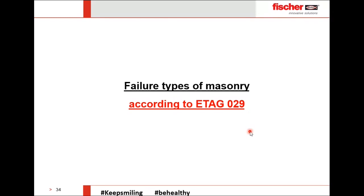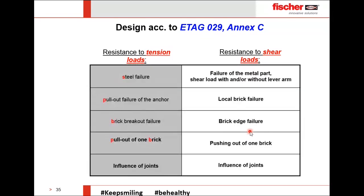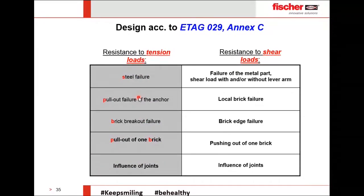Since we are in the Middle East, we follow E-TAG 029. Under this code, there are two types of resistance to check: resistance to tension load and resistance to shear load. For tension load, the checks are: steel failure, pullout failure of the anchor, brick breakout failure, pullout of one brick, and influence of joint. From experience, steel failure is rarely the governing mode — most failures in masonry occur due to pullout of one brick or brick breakout, since steel has much higher capacity than masonry.